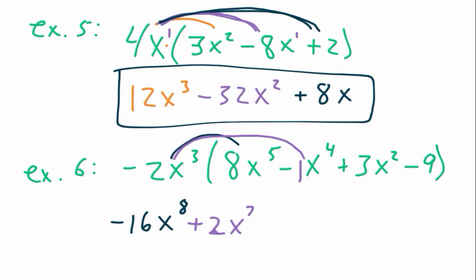All right. Next we have this negative 2x to the third times a positive 3x squared. So my number is going to be negative. Negative 6x to the fifth. Yep. Nice. Negative 6x to the fifth.